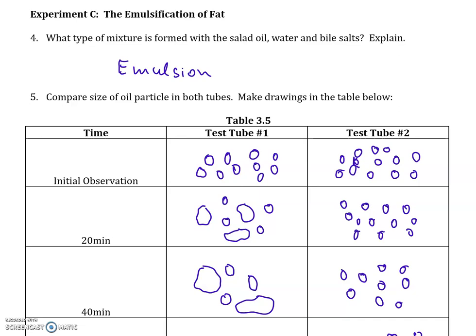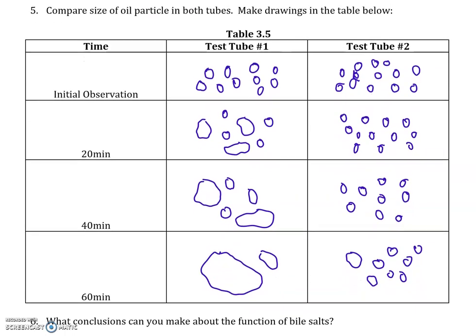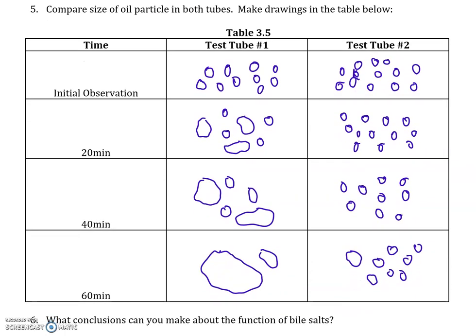If you are doing the experiment with fat or oil drops in water and you first shake it up, you are able to generate tiny little droplets that you can see under a microscope. Either way, with or without emulsifier, you would see small droplets under the microscope initially.